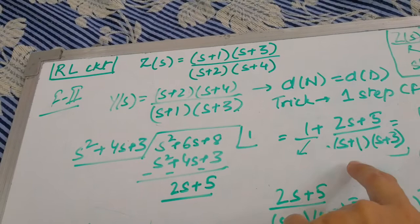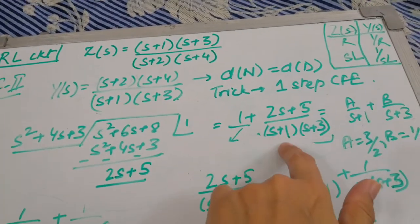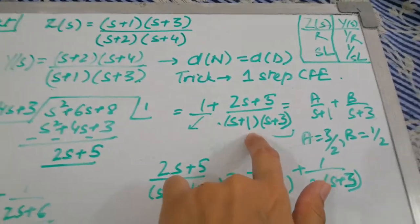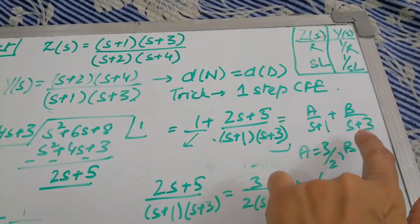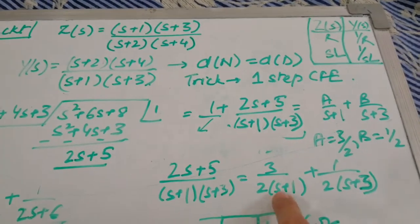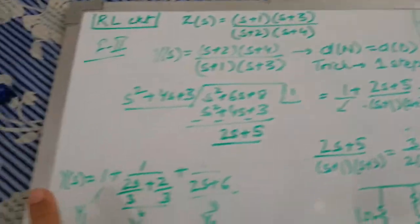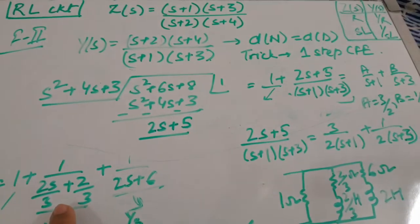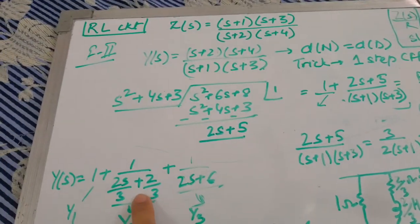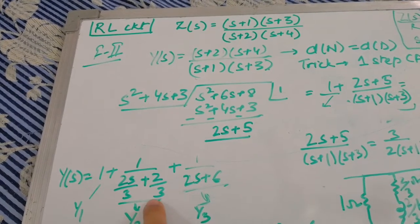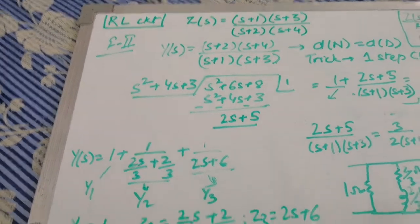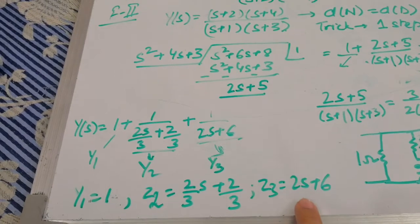So here is the one-step CFE: 1 plus (2s + 5) upon the denominator term. Since this is already in simple form we leave the leading term and take the partial fractions of the remaining term, giving a upon (s + 1) and b upon (s + 3), which provides values for a and b as 3/2 and 1/2. Putting these in and writing down along with 1, the complete function for Y(s) gives us the combined expression. Taking 3 to the denominator, we get Y2(s) as 1 upon (2s/3 + 2/3).